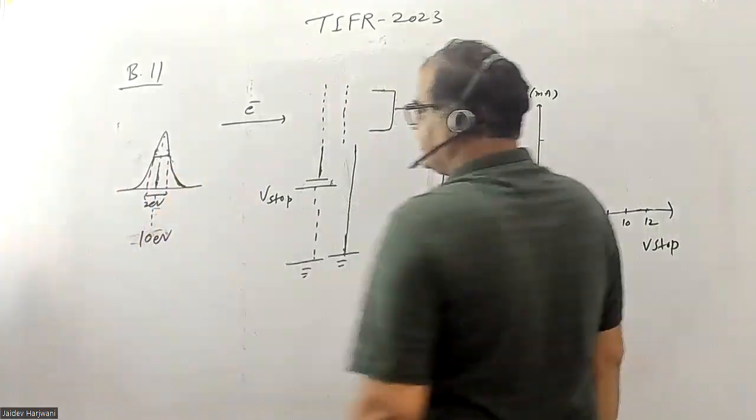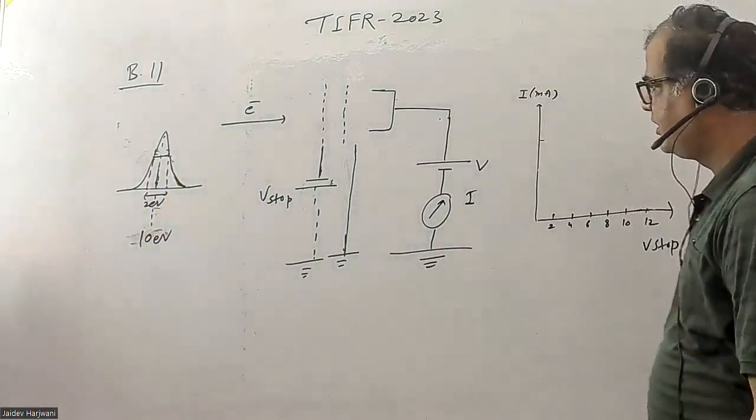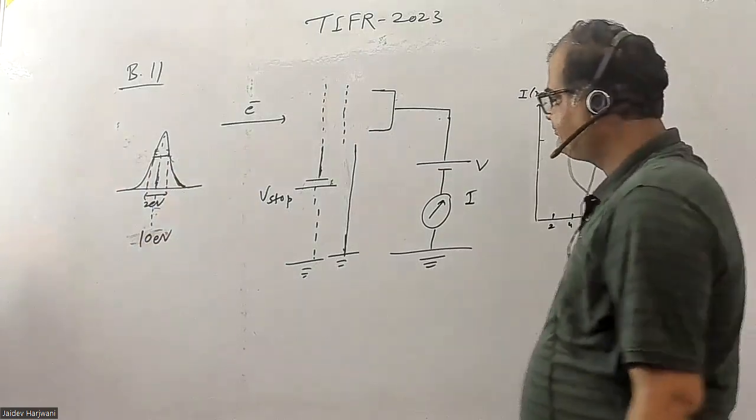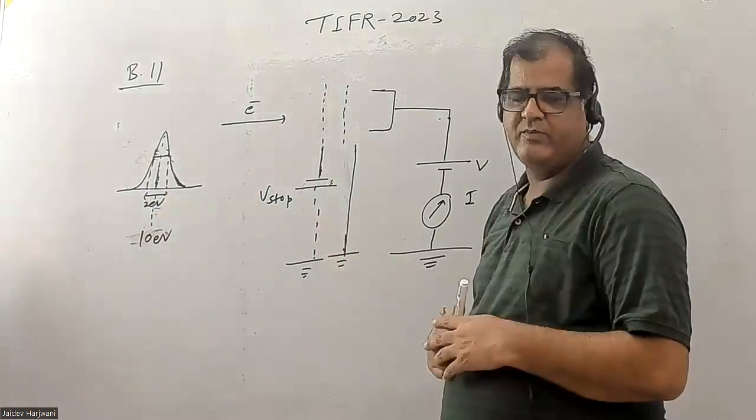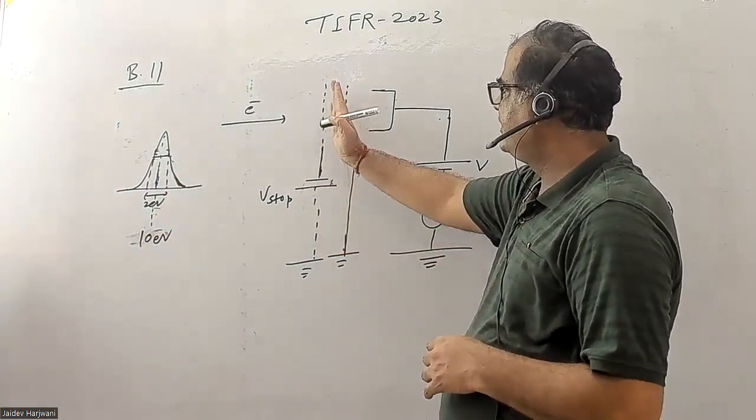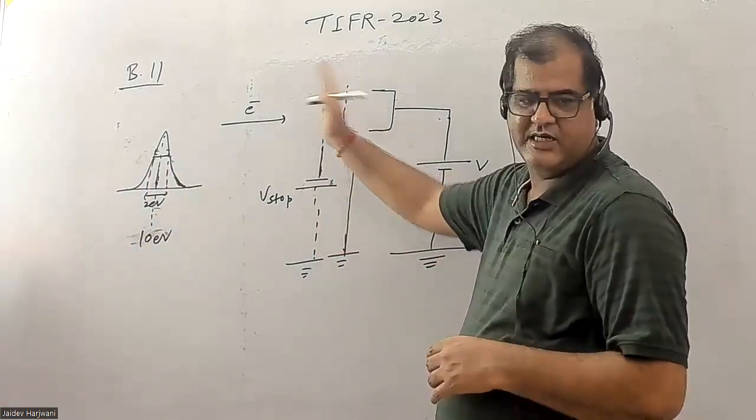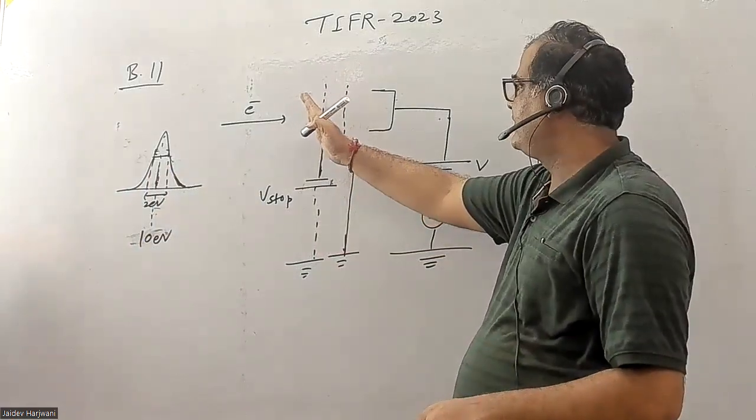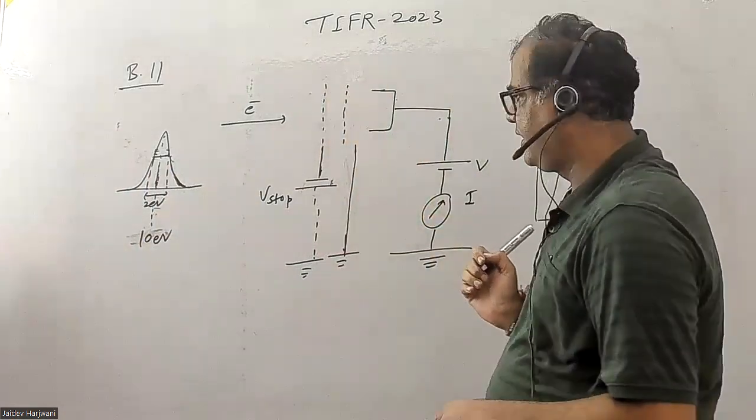Now you want to measure this energy experimentally, so you're applying this stopping potential here through this grid. As you increase the voltage, this potential will increase and repel the electrons, so slowly the current will start decreasing.